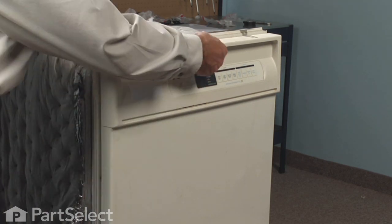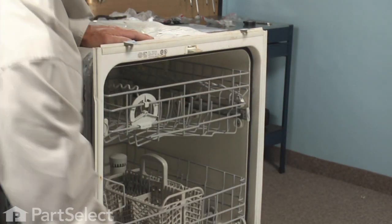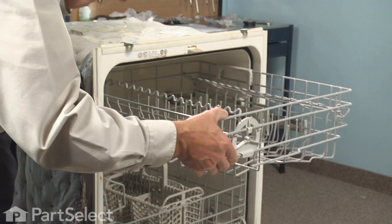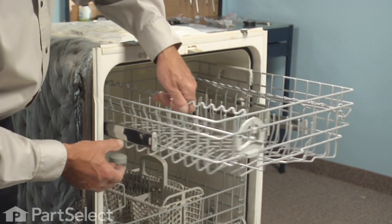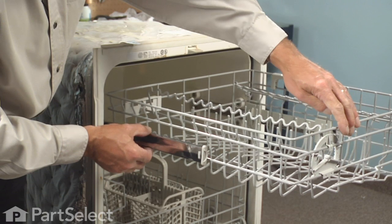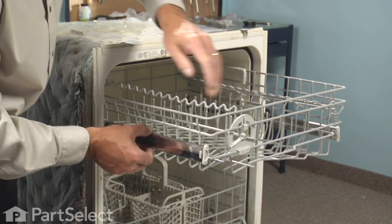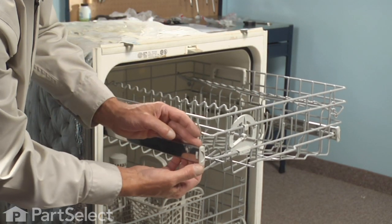The first step in this repair is to remove the upper dish rack. It's a lot easier to replace the part with the rack out on a convenient work space. To do so, pull the rack out as far as it'll go, holding the guide rails, push the rack back out of the way.